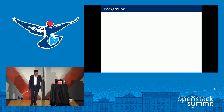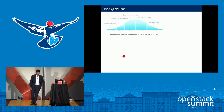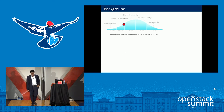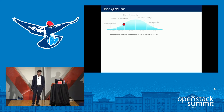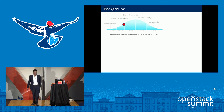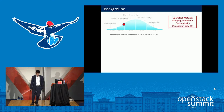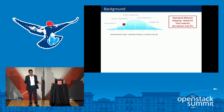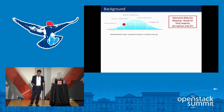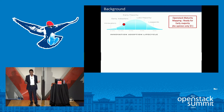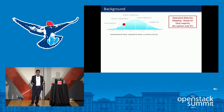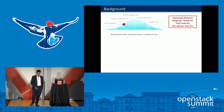Let's set the background. This is the famous innovation adoption lifecycle chart, and the dot I placed here represents OpenStack — it's an OpenStack maturity mapping. In my opinion, it's ready for early majority, though I acknowledge that's just my own view. That's how I look at the current stage of OpenStack, and as we know, adoption is increasing — we saw the numbers this morning.